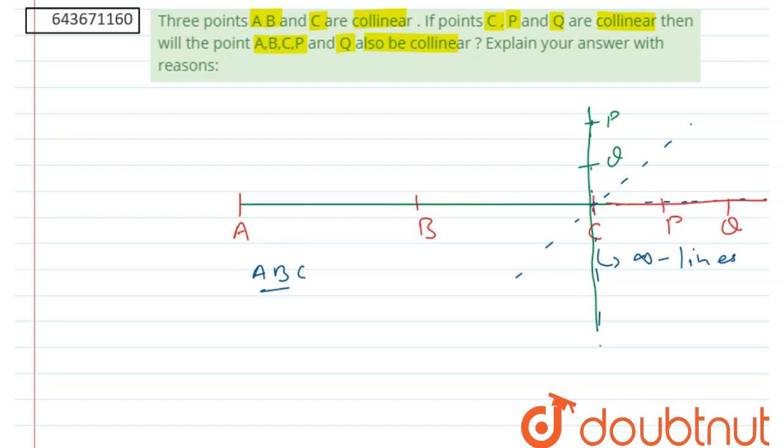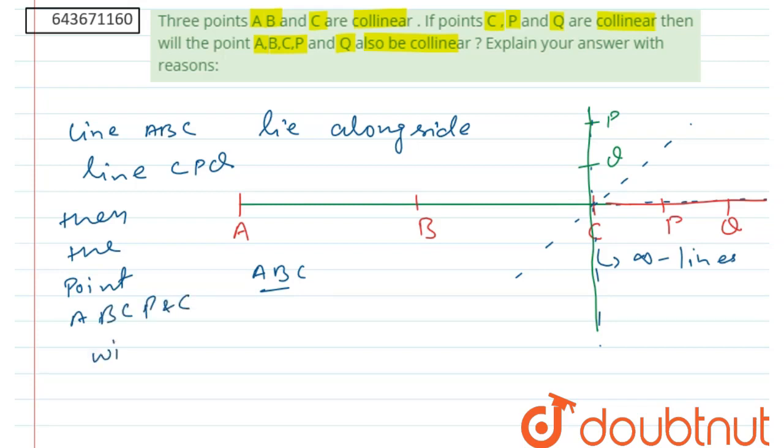When line A, B, C lie alongside line C, P, Q, then the points A, B, C, P, and Q will be collinear. That is, they will represent the same line.